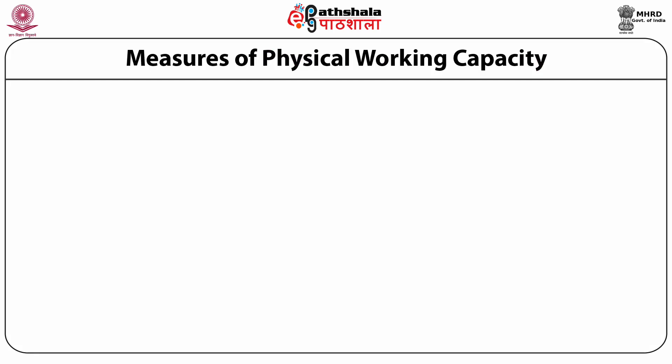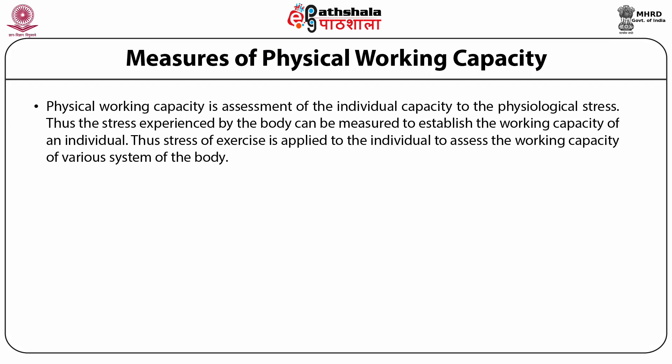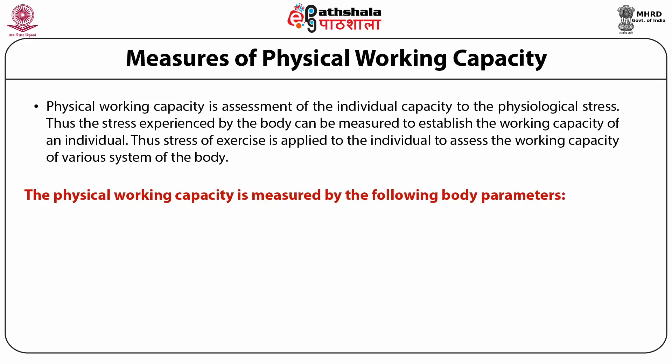Physical working capacity is the assessment of an individual's capacity to handle physiological stress. The stress of exercise is applied to the individual to assess the working capacity of various body systems. It is measured by parameters like cardiovascular efficiency, respiratory efficiency, and muscular strength. Cardiovascular efficiency is measured through heart rate, stroke volume, cardiac output, blood pressure, and blood flow.